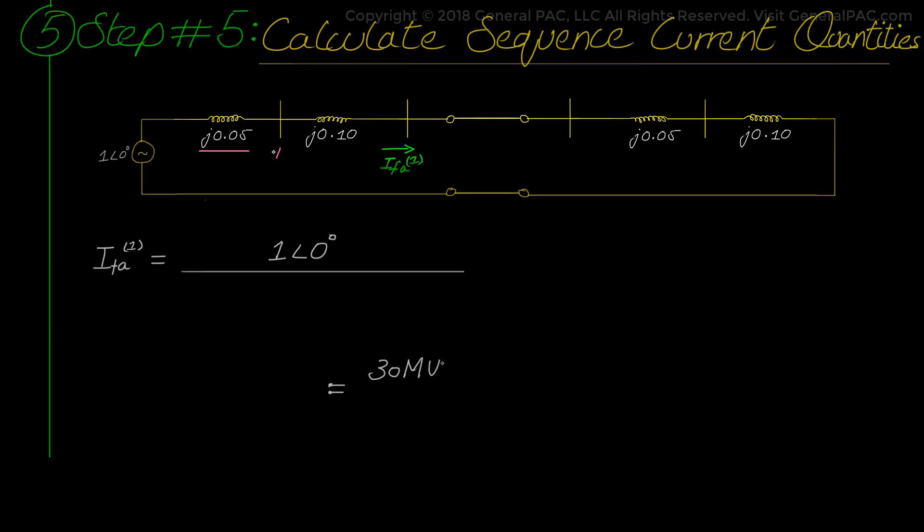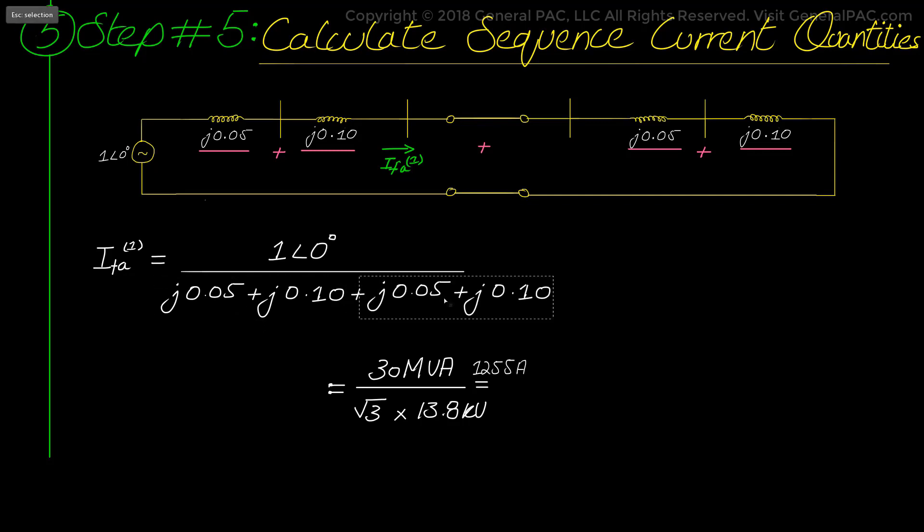That is j0.05 plus j0.10 plus j0.10 plus j0.10 plus j0.05 per unit. And when we compute this we get negative j3.333 per unit. Now this is the positive sequence current that is flowing through the connected sequence network and this is the per unit value.